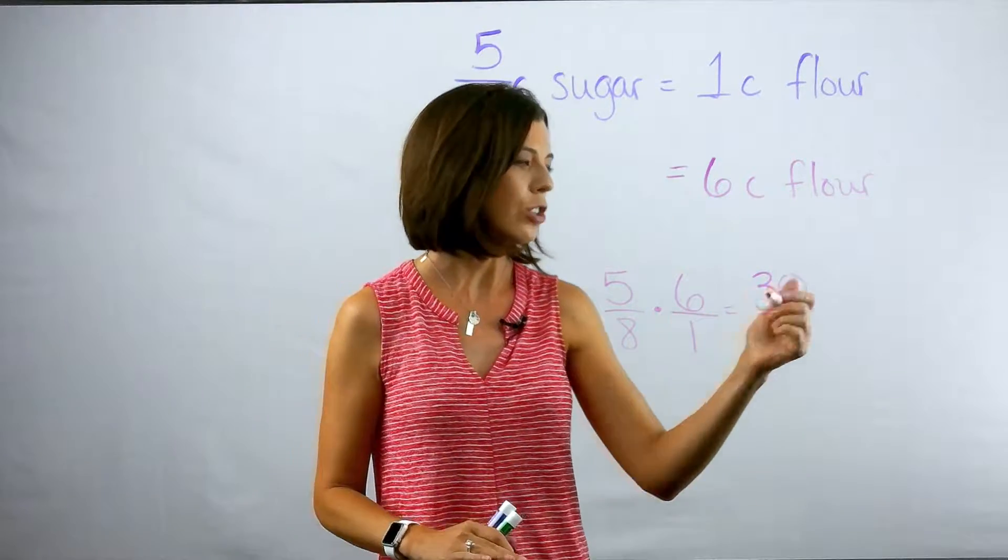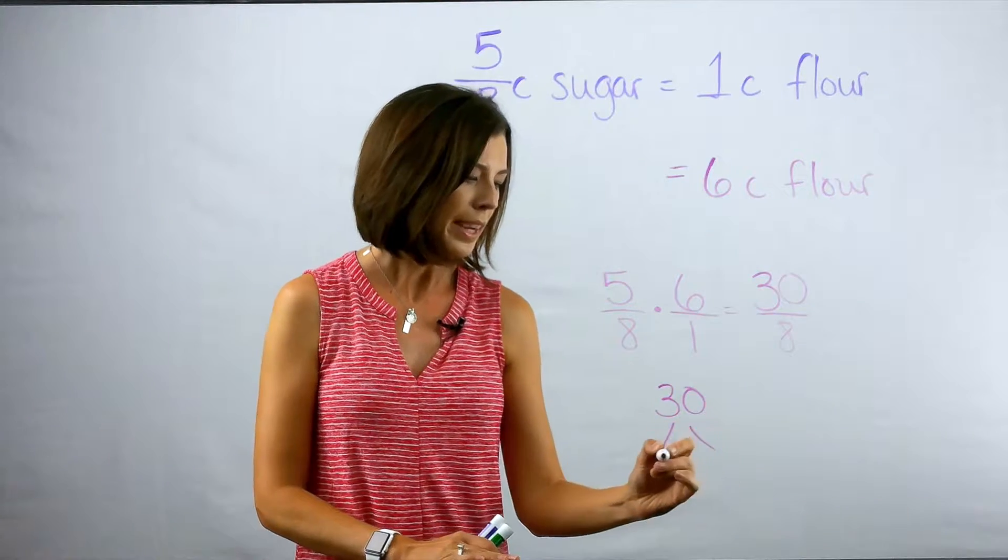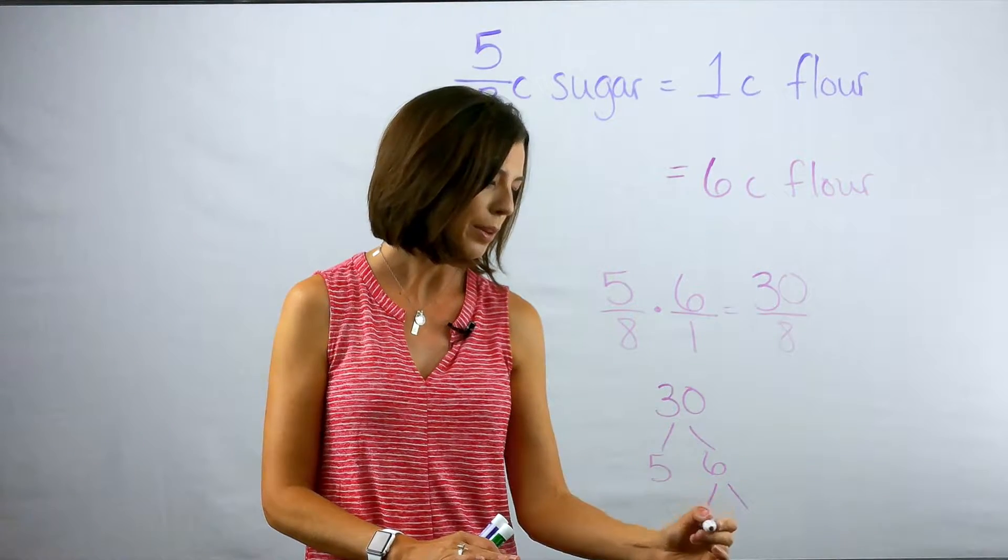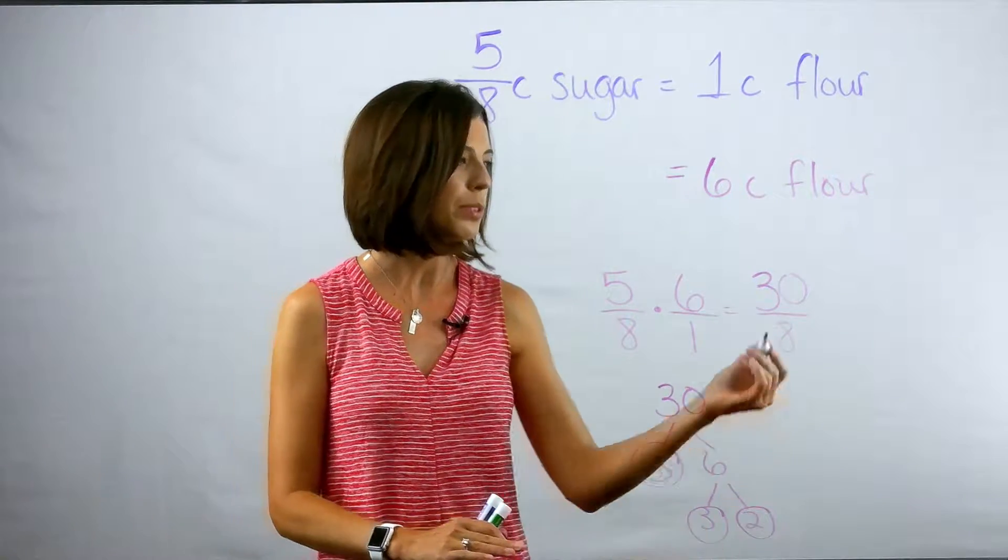Just do your prime factorization. So I know the prime factorization of thirty, I'll do that for you. It's five times six, and six can be broken down into three times two. So my prime factorization is five times three times two.